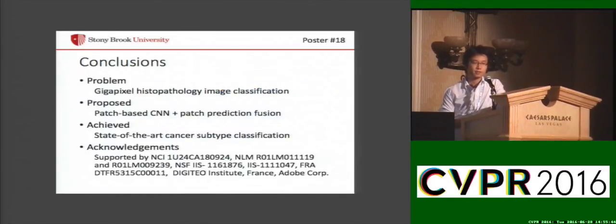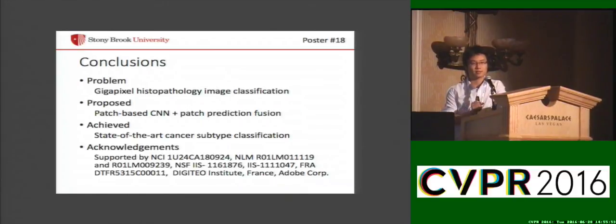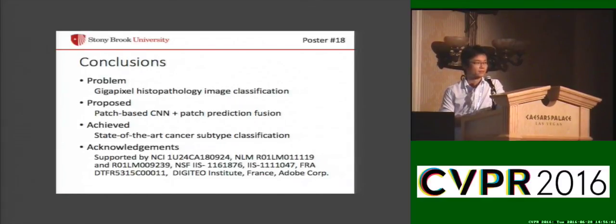To conclude, we propose a patch-based CNN for any kind of image classification where discriminative information is at the patch scale. We achieved state-of-the-art and close to human performance on cancer subtype classification. Thank you.